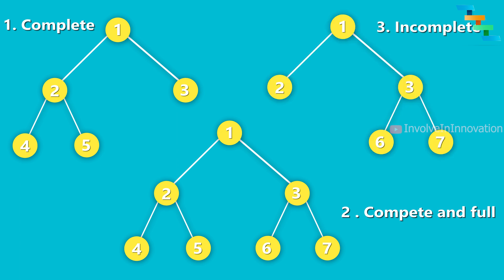The third tree is incomplete because in level 3 the nodes are not filled from left to right, so it is incomplete. A heap needs to be a complete binary tree.